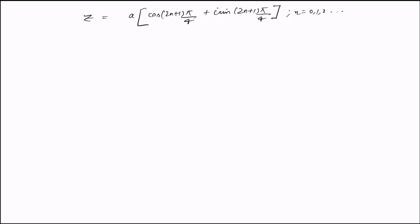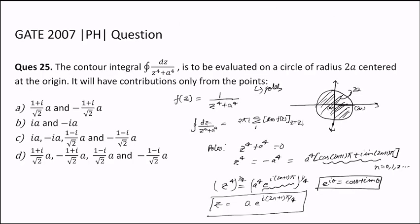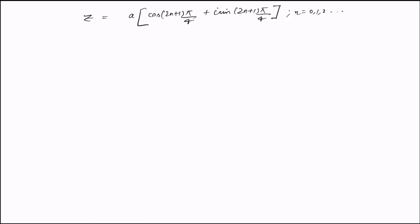Now we find all poles lying inside the contour. For n = 0, the first pole is z₁ = a times (cos(π/4) + i·sin(π/4)). Since cos(π/4) = sin(π/4) = 1/√2, this simplifies to z₁ = (a/√2)(1 + i).